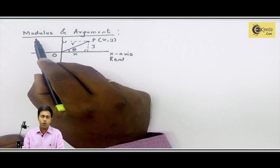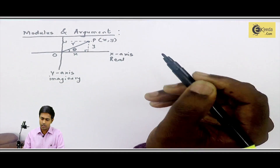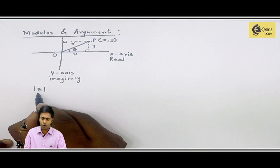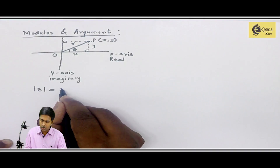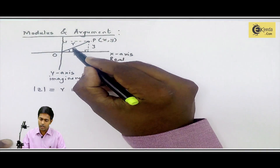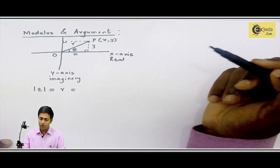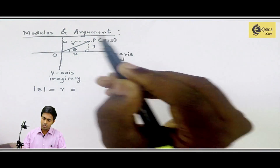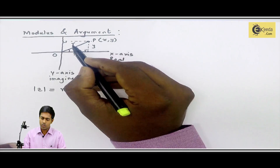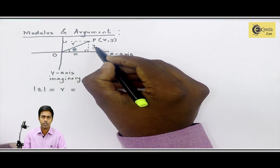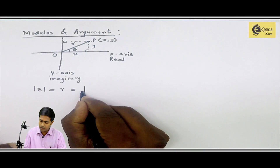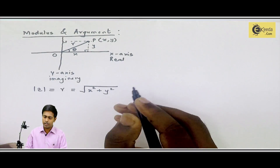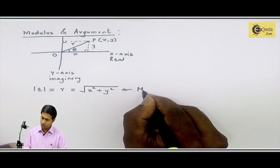If we want to find out the modulus of a complex number, it is generally denoted by mod z. This modulus is also called R. To find R, we can apply the Pythagoras theorem. According to Pythagoras theorem, the square of the hypotenuse equals the sum of the squares of the other two sides. So R will be the square root of x² + y², and this is the formula for modulus.